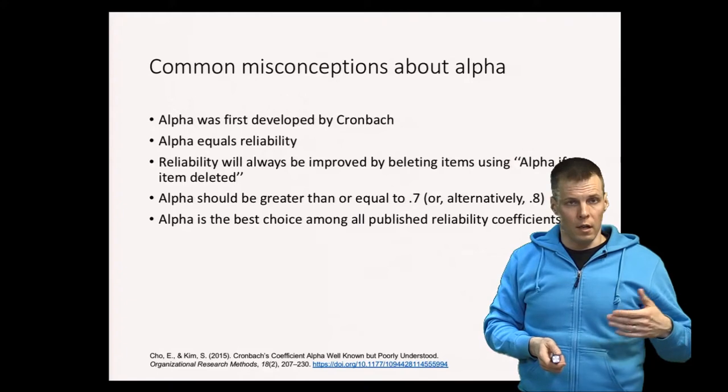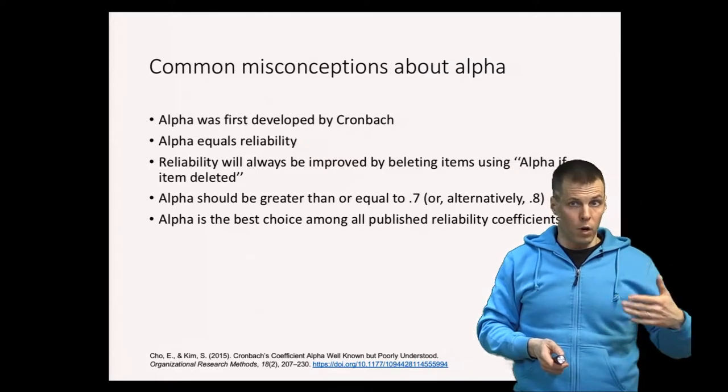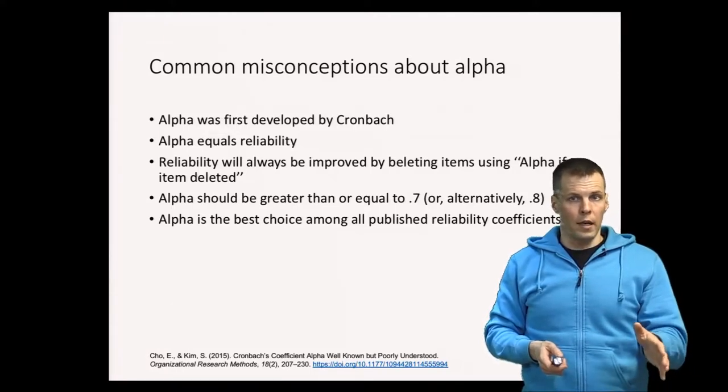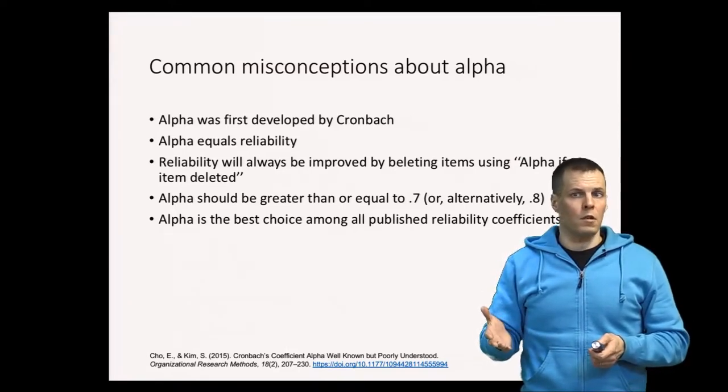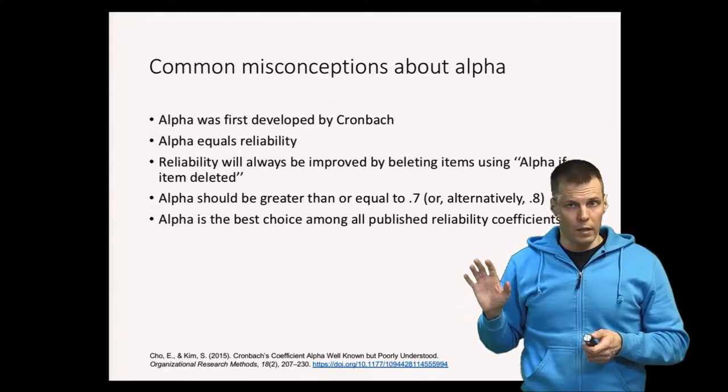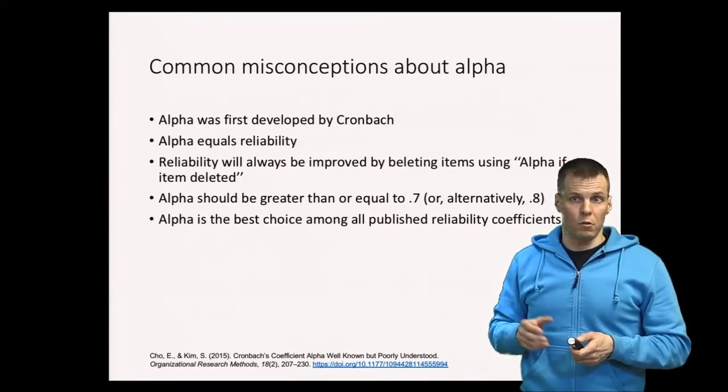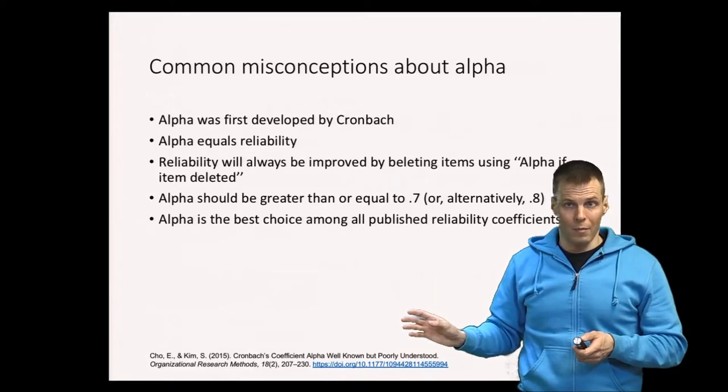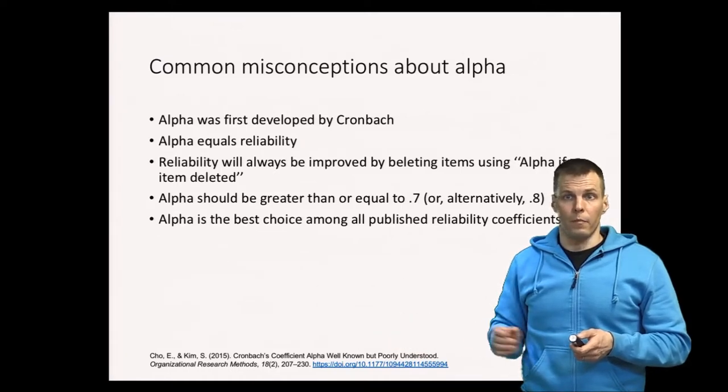Your statistical software when you calculate alpha also gives you an estimate of how much the alpha would be if you omit one of the indicators. For example it would say that if you have five indicators going to the alpha, dropping one of those indicators could increase the alpha. Should you drop the indicator? The answer to that question is not necessarily because dropping an indicator while it increases the alpha value, it can also mean that you're just capitalizing on chance factors. So the actual reliability doesn't increase. Remember that alpha is not equal to reliability, it is an estimate of reliability and we could just have an alpha value that is slightly overestimated because of random factors.